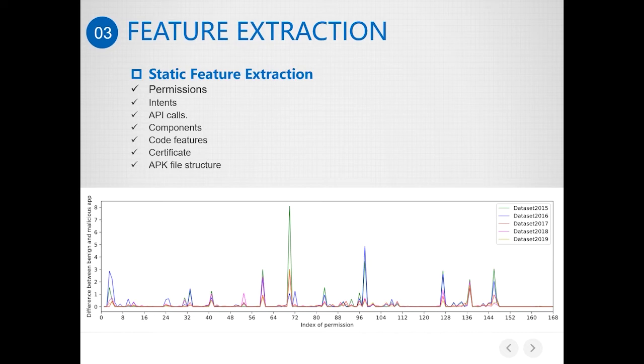This feature shows the different distribution of the samples we extracted from 2015 to 2019. We can see that almost 168 permission features we extracted are identical in distribution on each dataset. Though there are still some differences, our assumption is that the greater difference in permission, the stronger the ability to distinguish the malware.